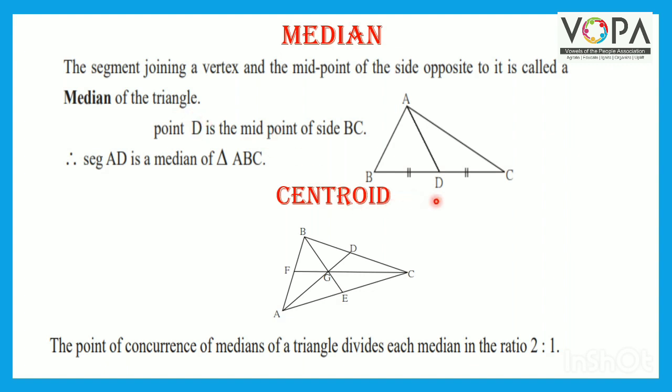Here in the figure, D is the midpoint of side BC and A is the vertex of the triangle. So the segment joining vertex A and the midpoint D, that is segment AD, is the median of triangle ABC. AD is one of the medians of triangle ABC.